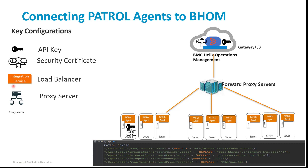The third important configuration is integration service. In TSOM, the agent talks to TSOM components using integration service as an intermediate component, and this communication happens using TCP protocol. However, in the BHOM context, this configuration allows you to connect PATROL agents with BHOM using HTTPS protocol. The value of the integration service variable will be the FQDN of the BMC Helix Operation Management tenant, also referred to as the BHOM gateway or load balancer. This should not be confused with the previous TSOM integration service load balancer.